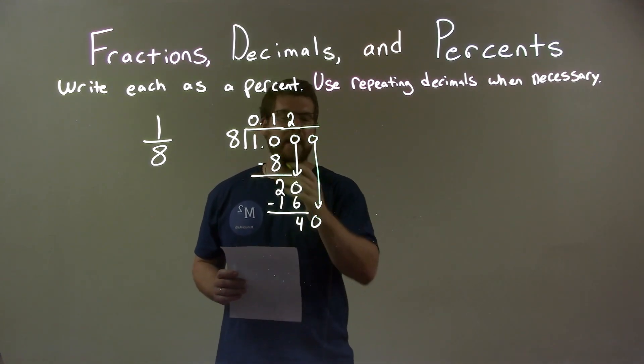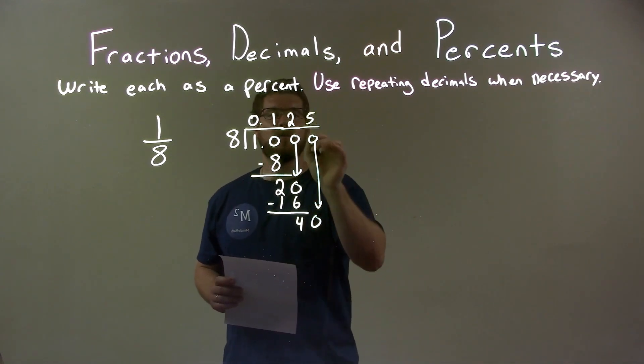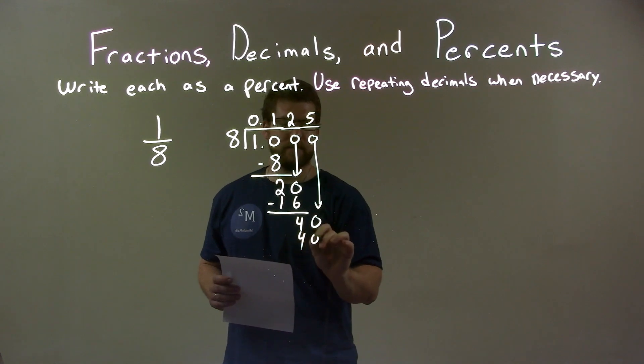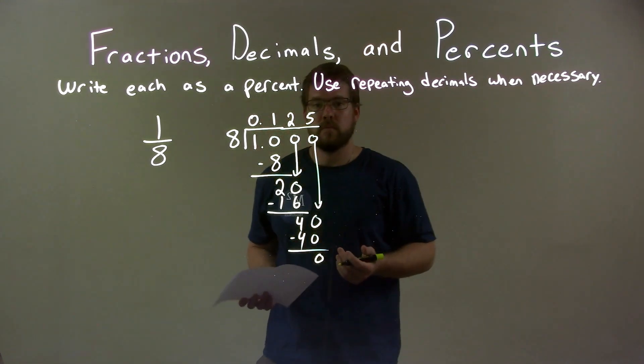We have 40. Now can 8 go into 40 evenly? Yes it can, 5 times. 5 times 8 is 40. Subtracted, 40 minus 40 is 0, and so we're done.